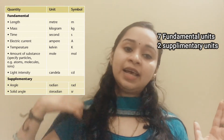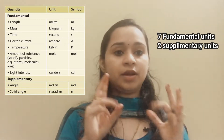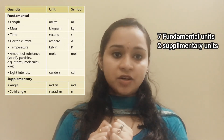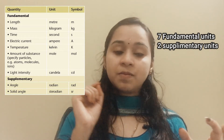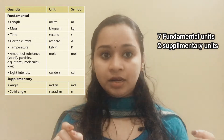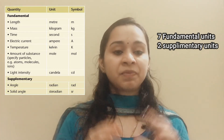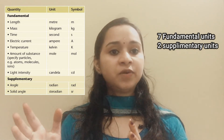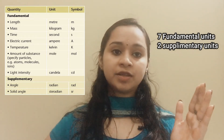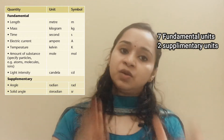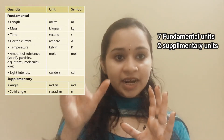So, these are the seven fundamental units and two supplementary units. In the NCERT textbook, page number 17, there is a table — Table 2.1. In this table, there are the fundamental units, supplementary units, their symbols, unit names, and definitions.